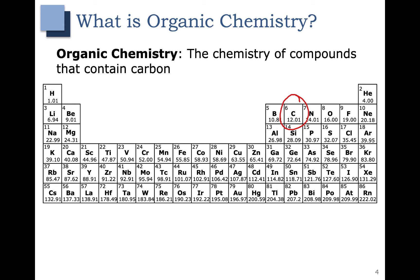You may have heard the term 'organic' referring to foods — this doesn't have anything to do with organic chemistry. Organic chemistry is just talking about things that contain carbon. So a lot of things, whether they're natural or unnatural, if they contain carbon, we say that they are organic molecules.